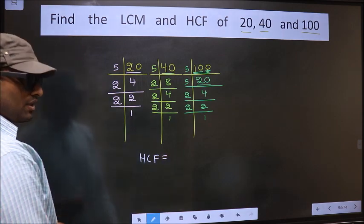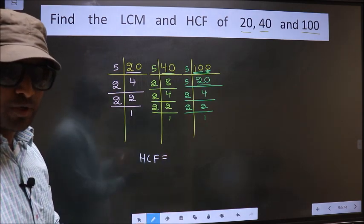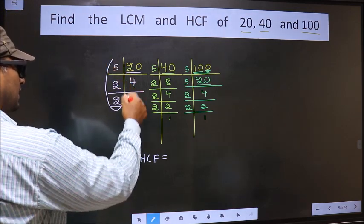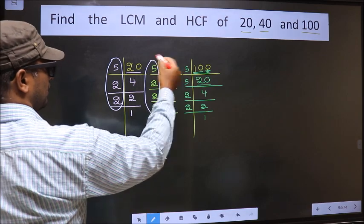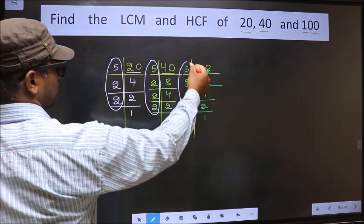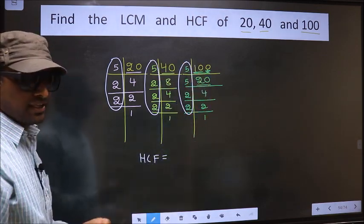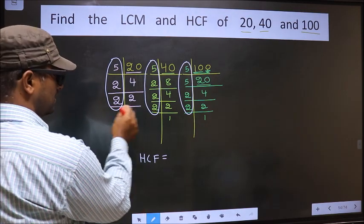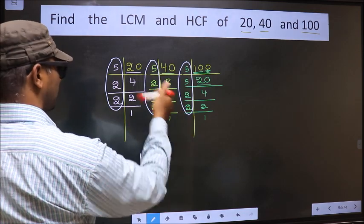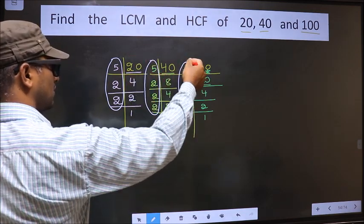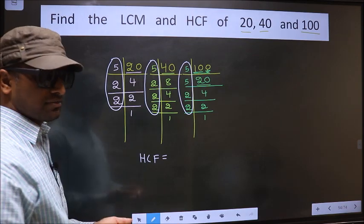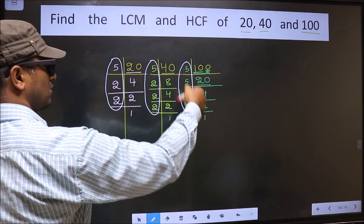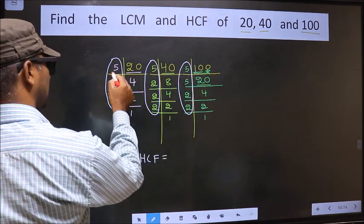HCF is the product of numbers which should be present over here and here and also here. I repeat, HCF is the product of numbers which should be present in these 3 places. So now let us find the numbers which are present here, here and also here. Starting with the number 5.